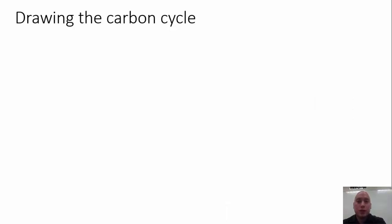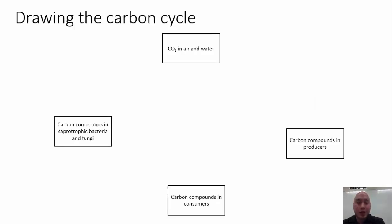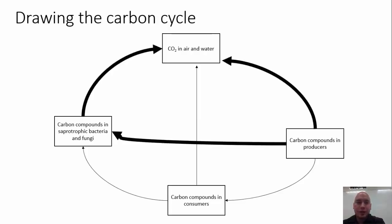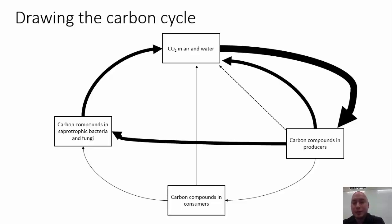Alright, so draw the four carbon sinks. Draw your arrows from each carbon sink to the other, light arrows. Draw your medium-sized arrows. Draw your big arrow from carbon dioxide in water to producers. Draw the carbon compounds from producers going to the air. And finally, label each one.